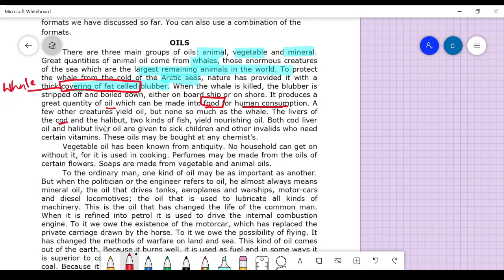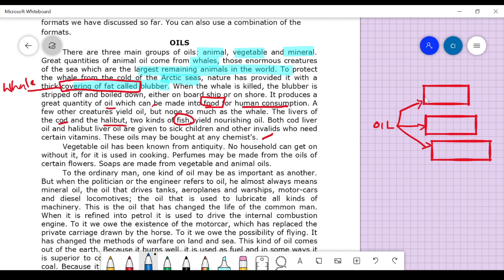A few other creatures yield oil, but none so much as the whale. The livers of cod and halibut - two kinds of fish - yield cod liver oil and halibut liver oil, which are given to sick children and invalids who need certain vitamins.